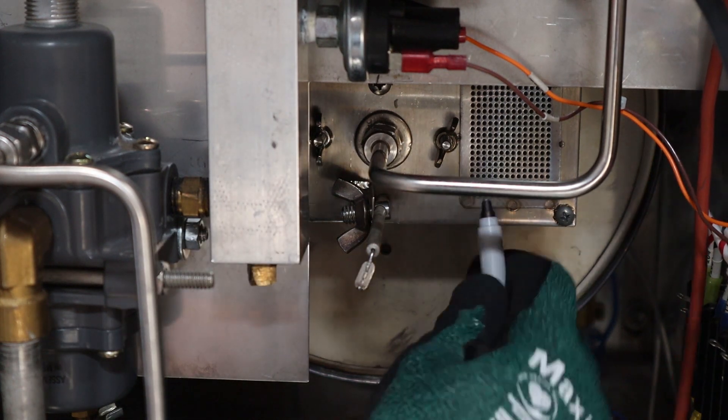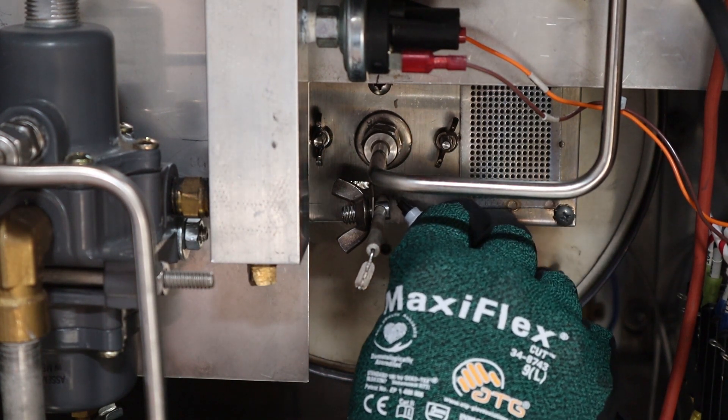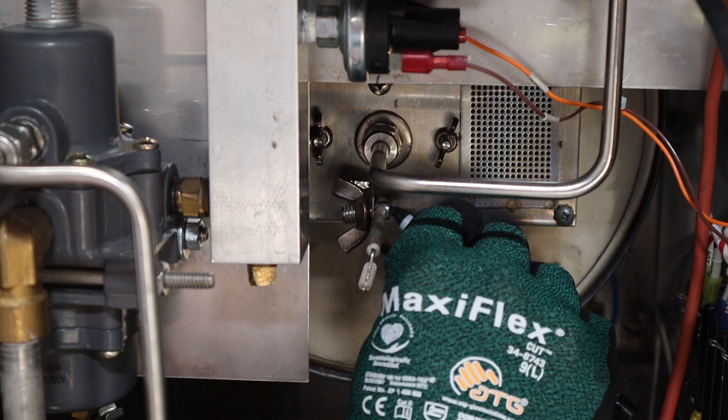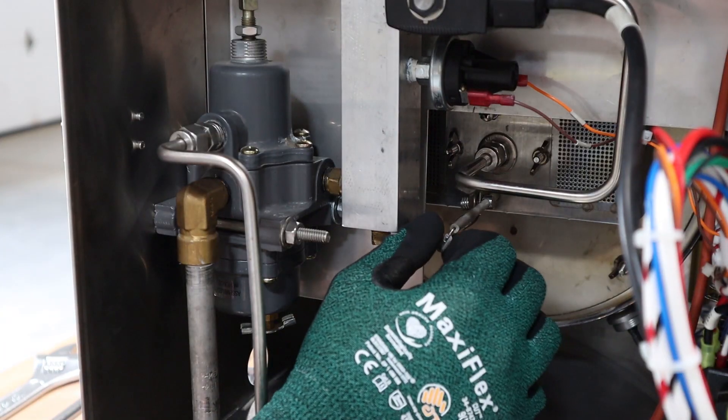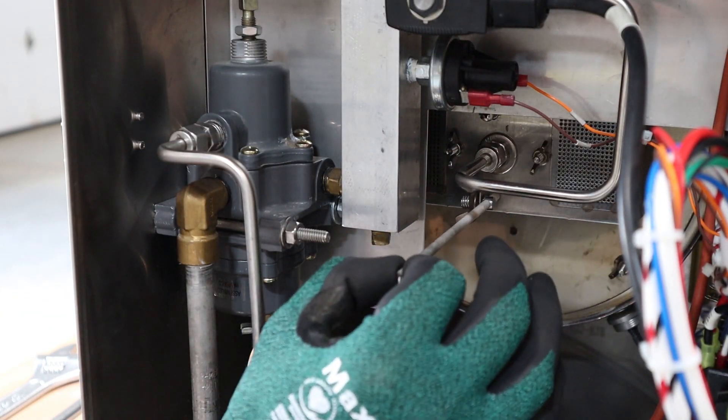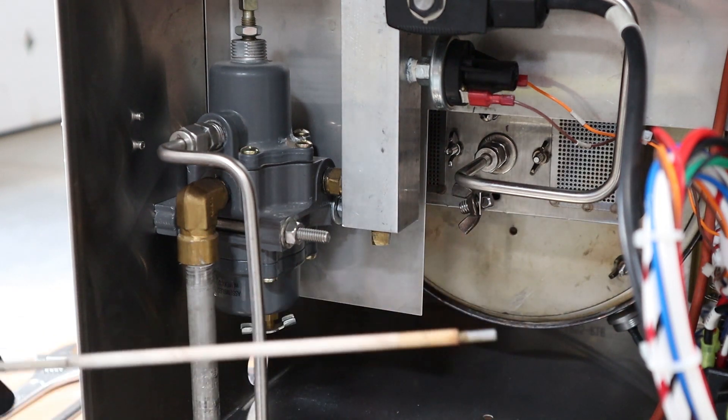Take your trusty marker, and we're actually going to want to mark right on the electrode against that air box. Now that you've made your mark, we just need to pull the electrode out and we'll make the measurement to set it properly.